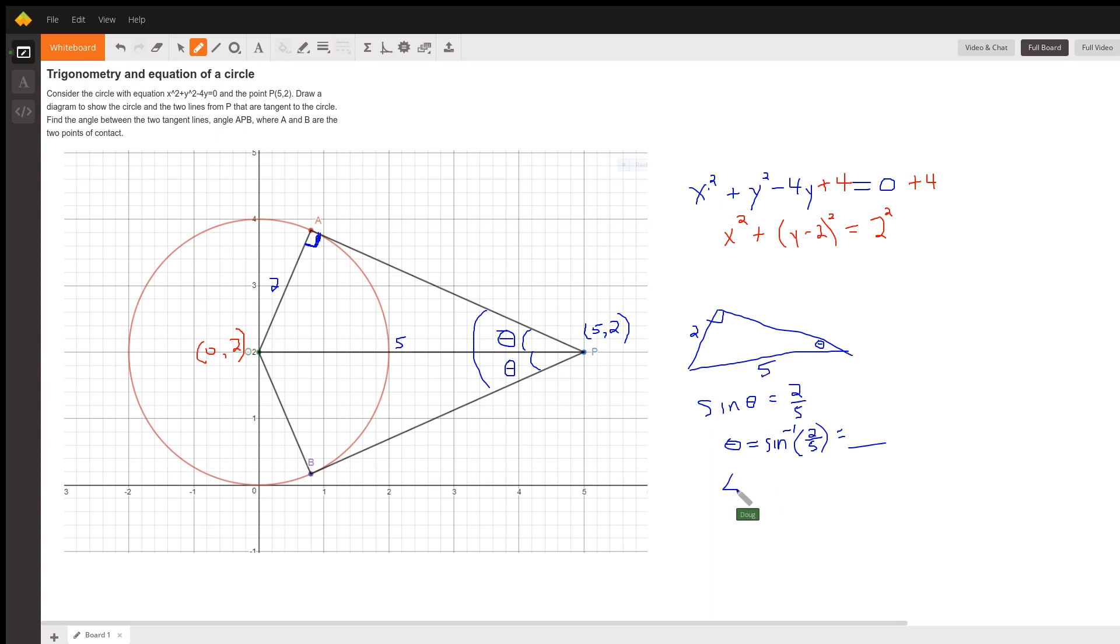Angle APB has measure 2θ. So on your calculator, figure out what the inverse sine of 2/5 is—we'll be using the first quadrant angle.